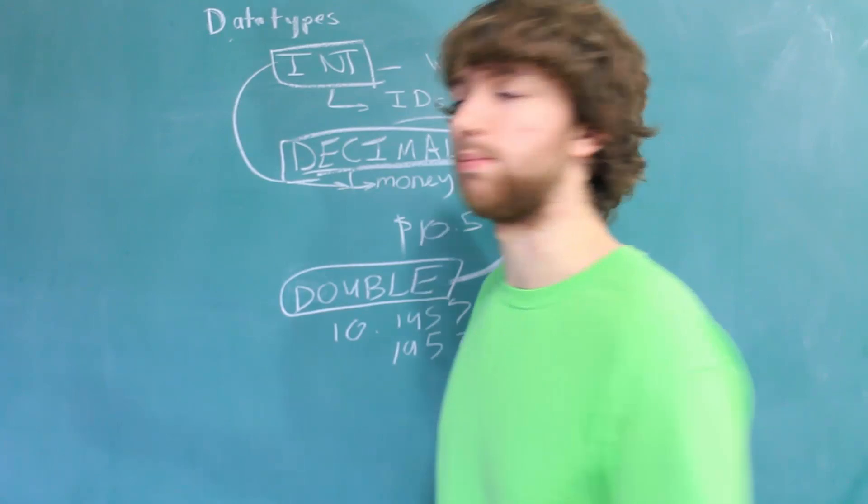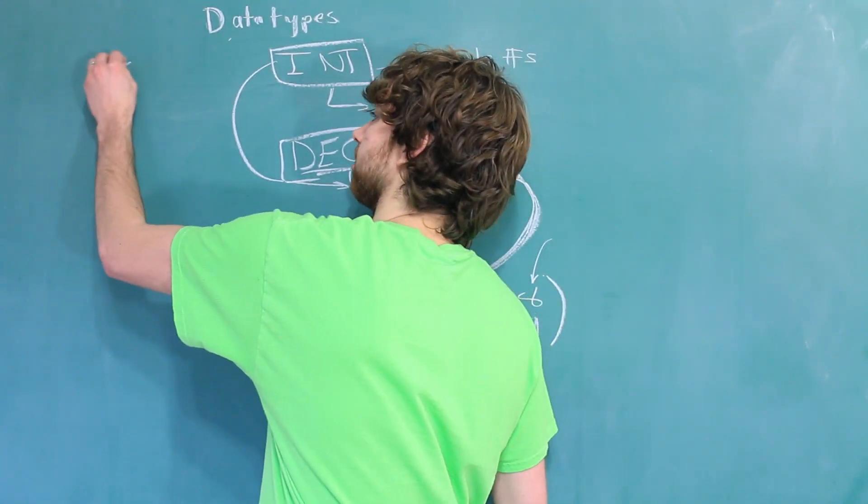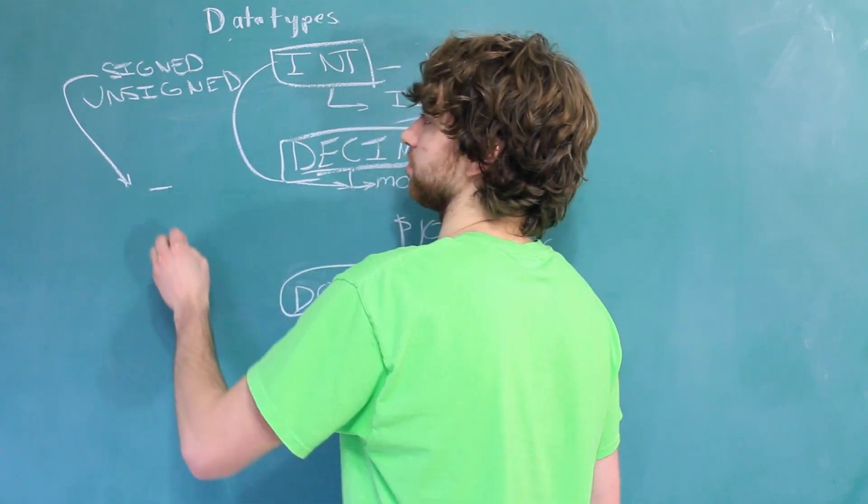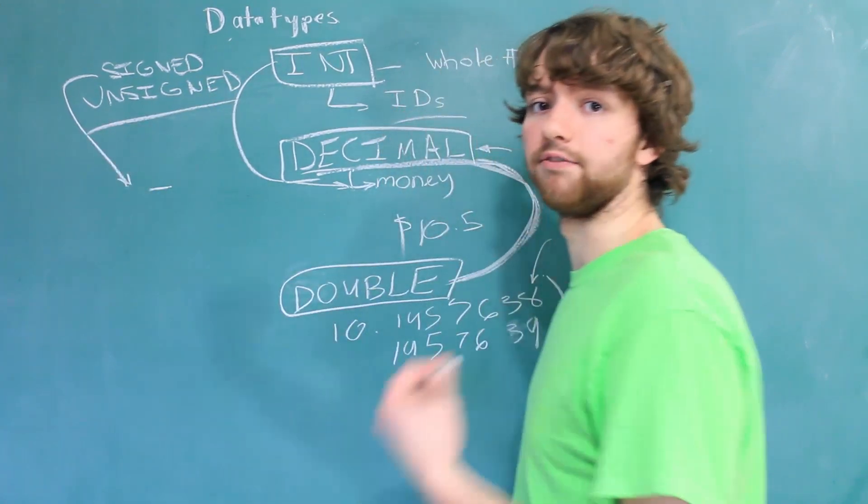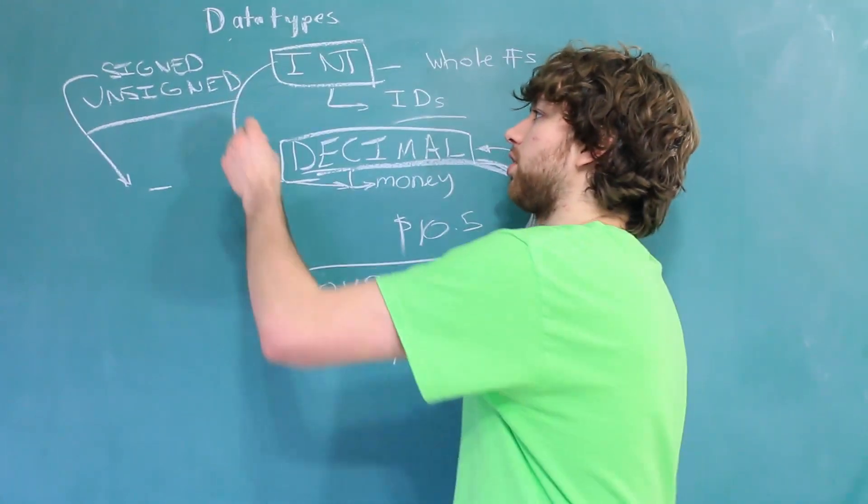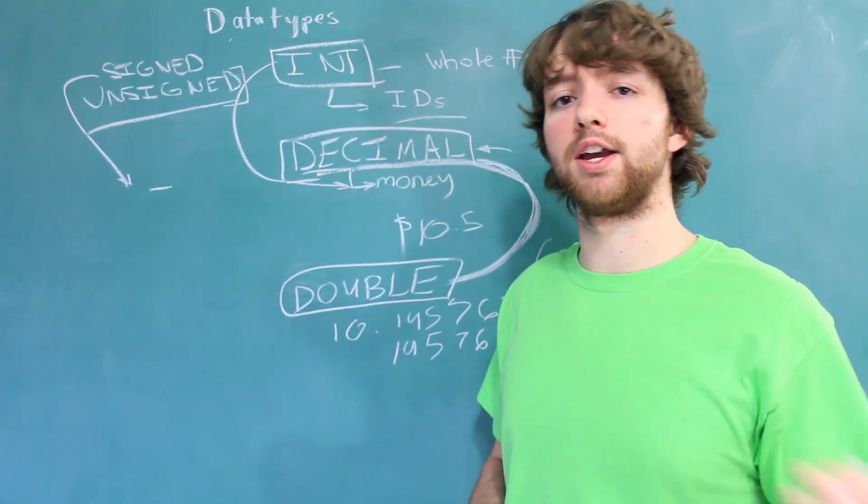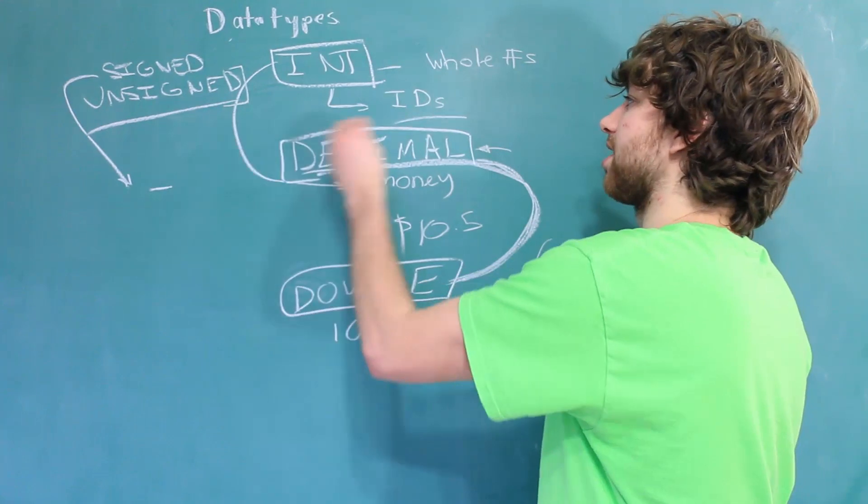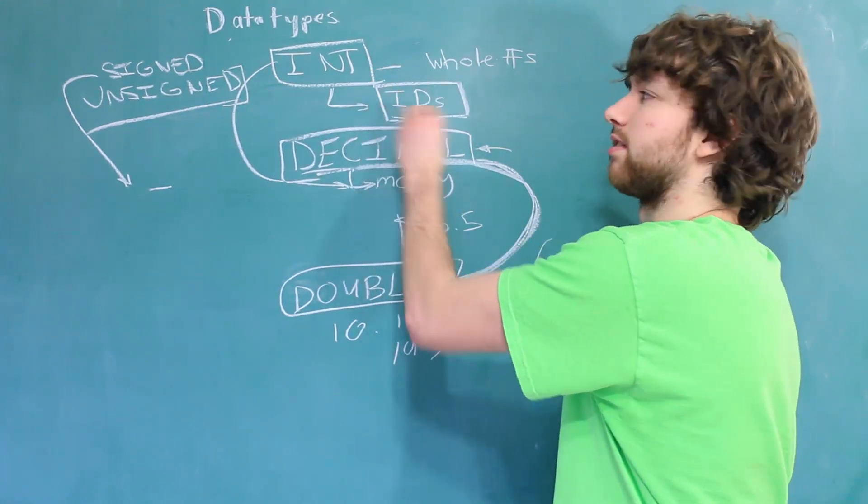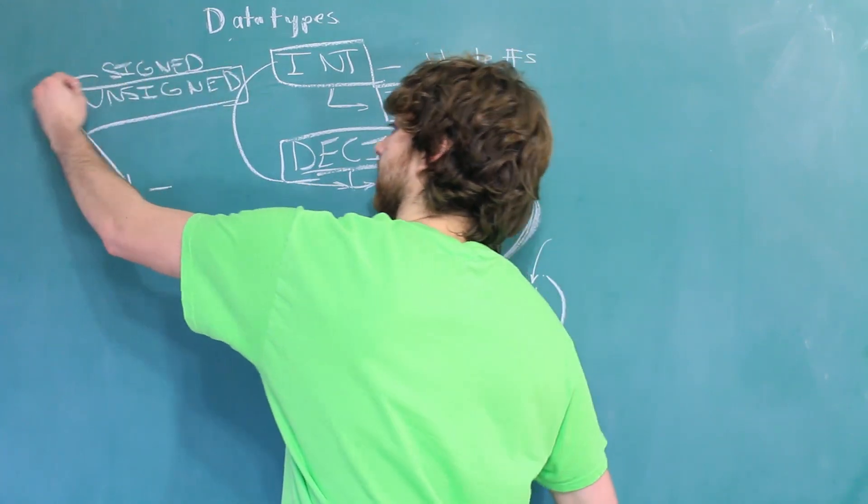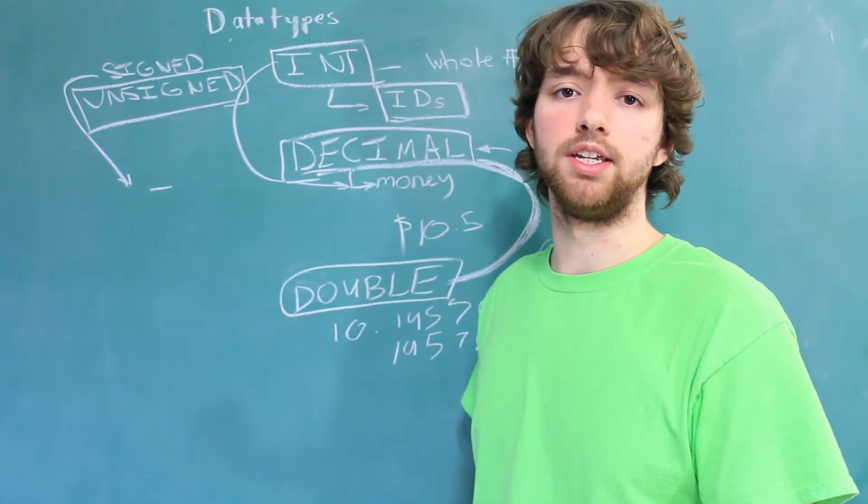Now numeric data types can have two options, signed and unsigned. The difference between these two is that signed will allow for negative numbers, where unsigned will not allow for negative numbers. The reason you would want to use unsigned is because it allows you to have higher positive numbers. So for example, if you're working with IDs, the chances are they'll never be negative. So you can make the data type unsigned and then you can store more IDs in your table.